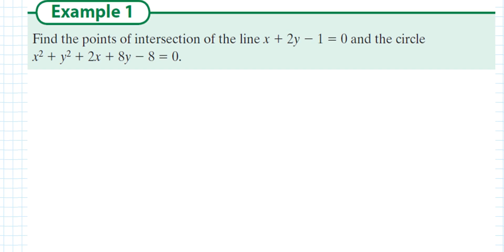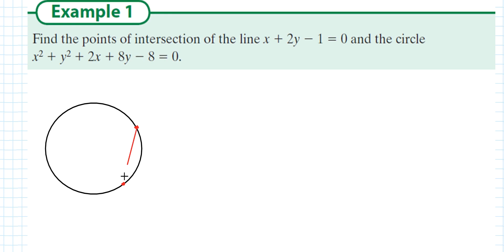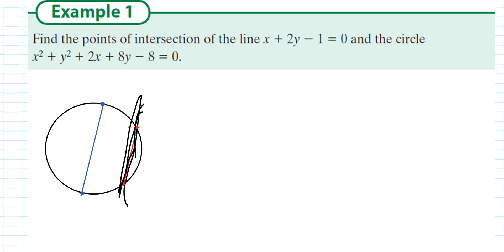In this video we're going to look at chords of a circle. A chord is a line that joins any two points on a circle. This line is a chord, similarly this line here is a chord, and the diameter is also a chord. So an important distinction: diameters are definitely chords but chords are not necessarily diameters.